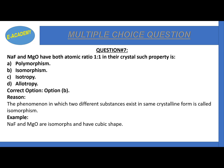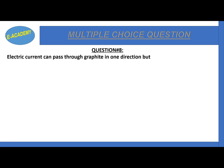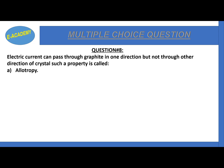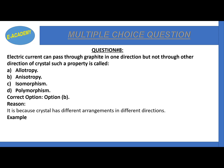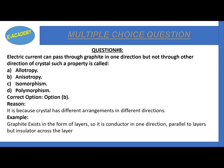Question number 8: Electric current can pass through graphite in one direction but not in another direction. Such property is called allotropy, anisotropy, isomorphism, or polymorphism? The correct option is B: anisotropy. Anisotropy shows different properties in different directions. Graphite exists in the form of layers, so it is a conductor parallel to the layer but an insulator across the layer.